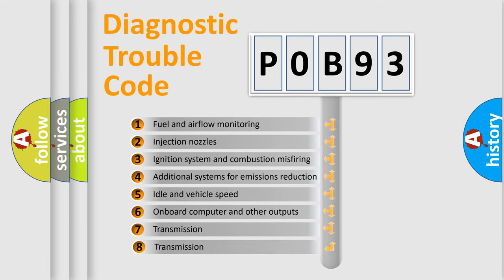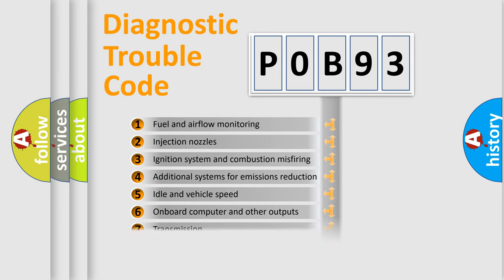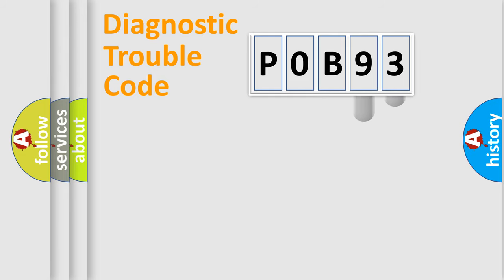The third character specifies a subset of errors. The distribution shown is valid only for the standardized DTC code. Only the last two characters define the specific fault of the group.